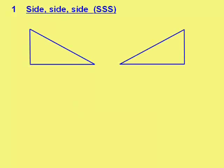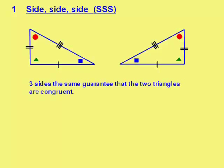And there are two triangles. Those sides are all the same, and those angles are also all the same, because three sides the same guarantee that the two triangles are congruent.